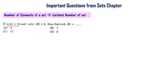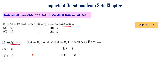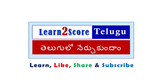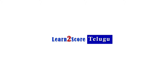If n(A) equals 12 and n(A∩B) equals 5, then find the value of n(A minus B). This is from the AP final exam 2017. If n(A) equals 8, n(B) equals 3, and n(A∩B) equals 2, then what is the value of n(A∪B)? This is from the AP 2019 exam. I am going to solve all these problems in this video.